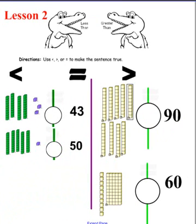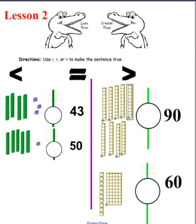Lesson two. Just like before, determine which side is greater than the other, then place the symbol in the circle, and we'll come back and check to make sure you are correct. We have problems one, two, three, and four. Please pick up the red pen and answer those questions now.